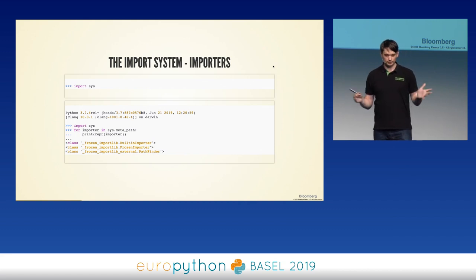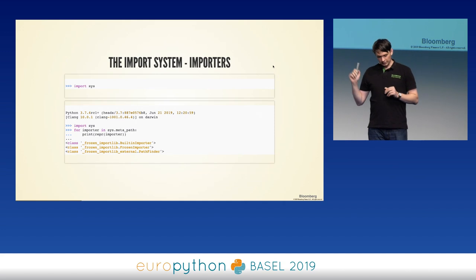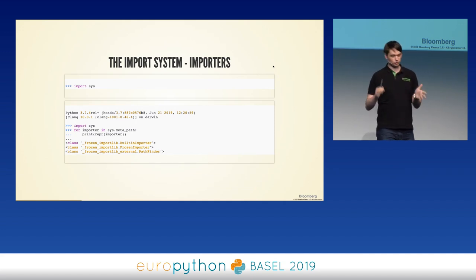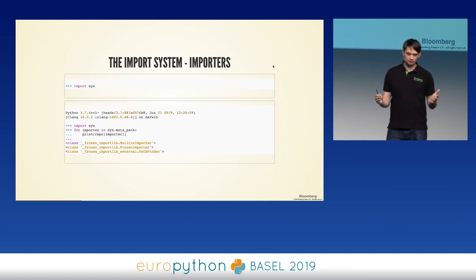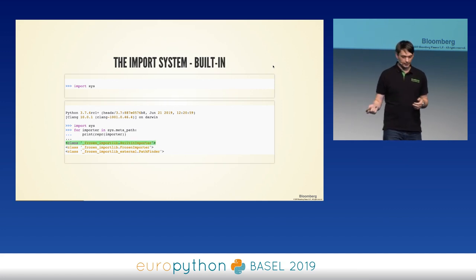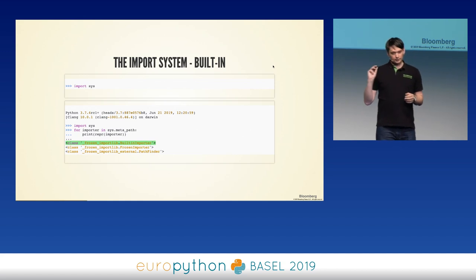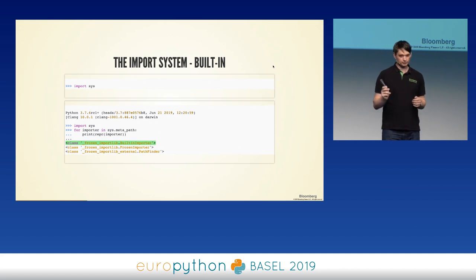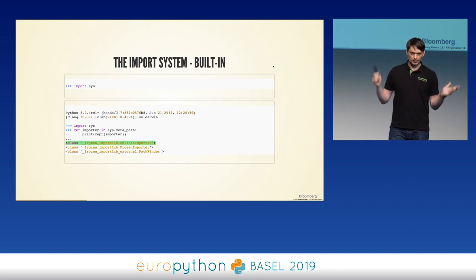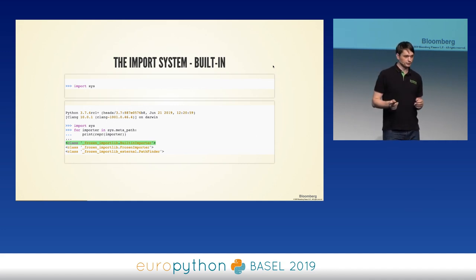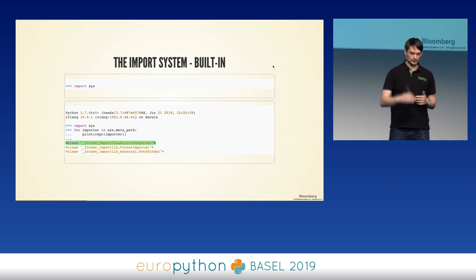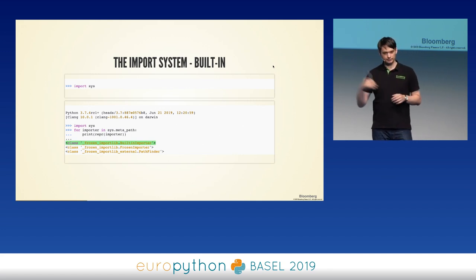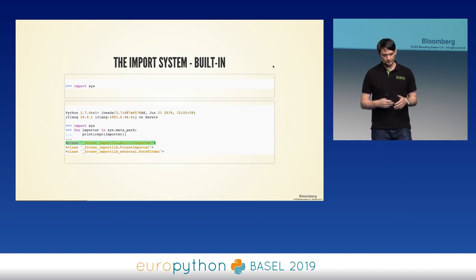The import system has evolved throughout Python's life, but in Python 3.7 it works as follows. Python doesn't know if something is importable or not — it tries first and asks for forgiveness later. It has a list of importers and asks each one in order, 'can you give me this module?' The first importer that can return it does so, and Python doesn't fall through to the next one.